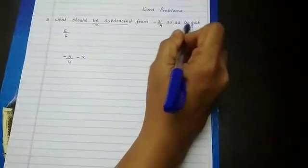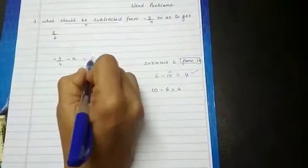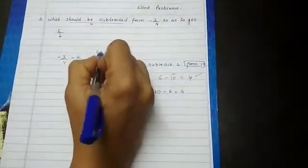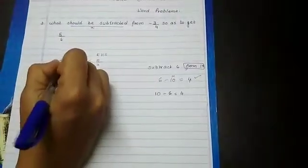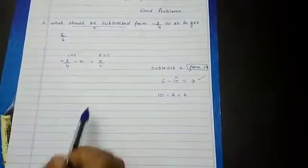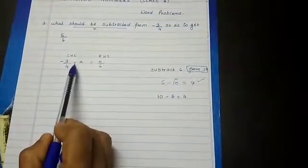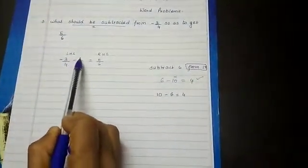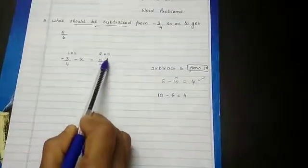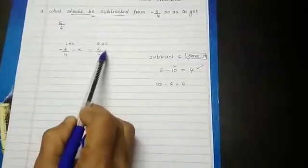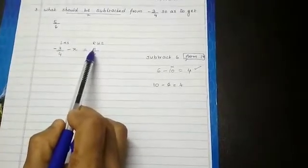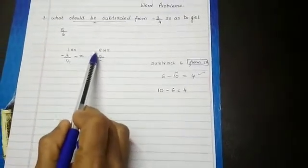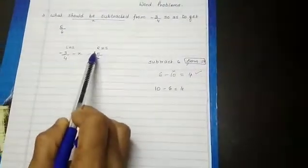So as to get, that means the result should be 5 by 6. Now this is right hand side and this is left hand side. Now here you can see x is in negative sign. So we will shift this x towards the right hand side and make it positive. And we will bring 5 by 6 towards the left hand side and make it negative.